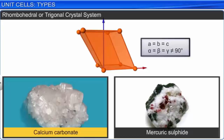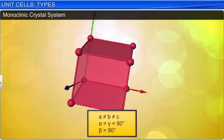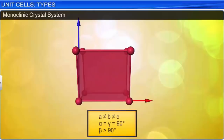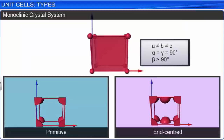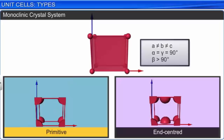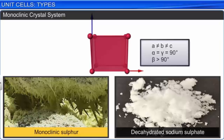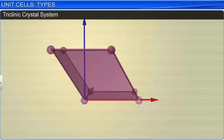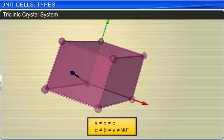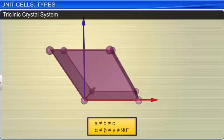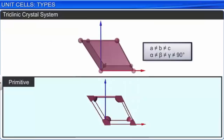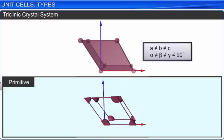In a monoclinic crystal system, the three axes are of unequal length and only two angles are 90 degrees. The possible lattices are primitive and end-centered. Examples include monoclinic sulfur and decahydrated sodium sulfate. In a triclinic crystal system, the three axes are of unequal length and all angles are different, none equal to 90 degrees. The only possible lattice is primitive. Potassium dichromate, boric acid, and copper sulfate pentahydrate are some examples.